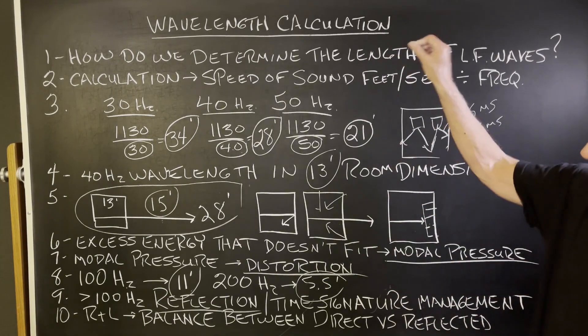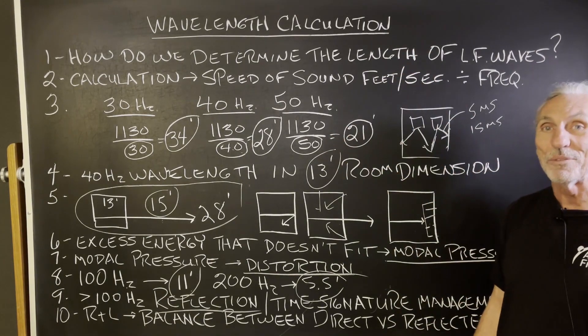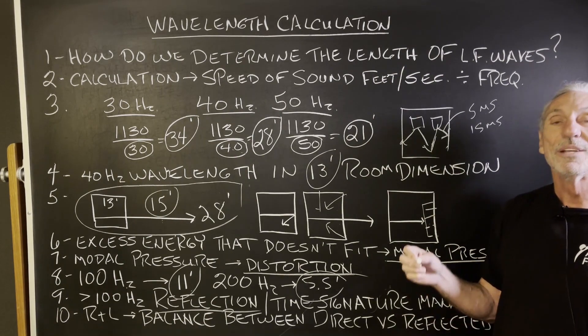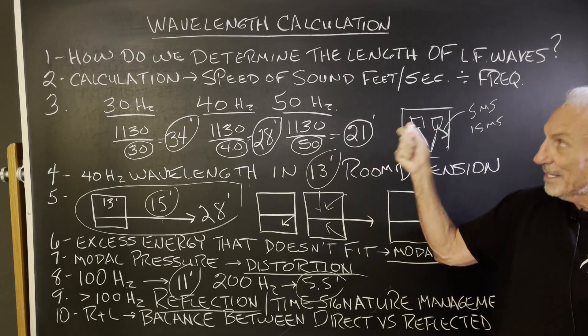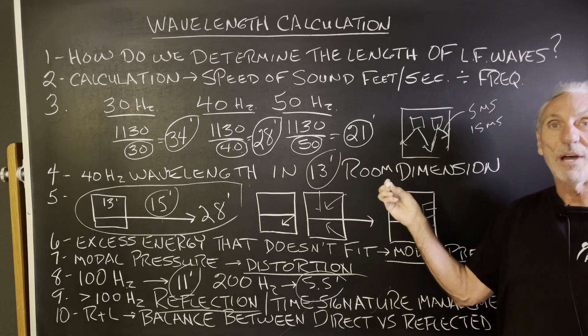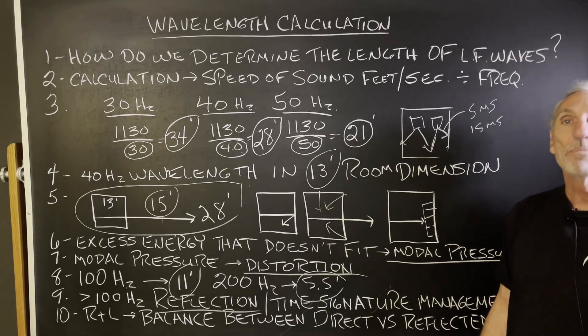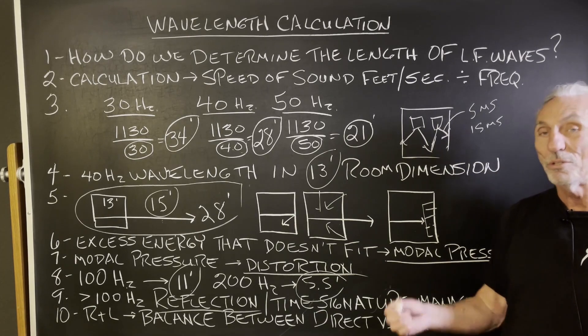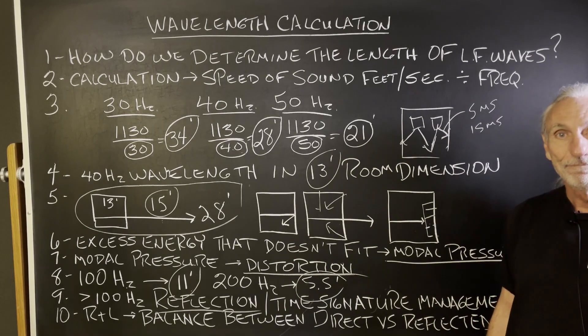So just remember, if the energy in your room is longer than the dimensions of the room, you're going to have distortion. There's other factors involved, I understand that. But I'm trying to get things simplified to a point that people can understand pressure and reflections. Those are the two main variables that we have in small room acoustics. Hope this helps.